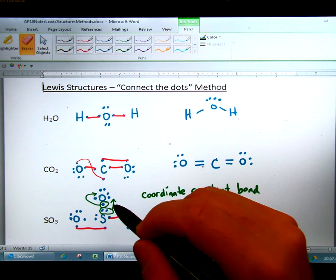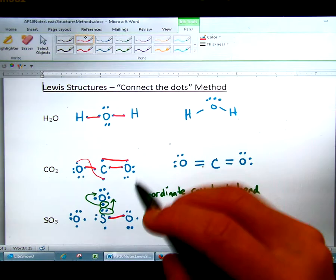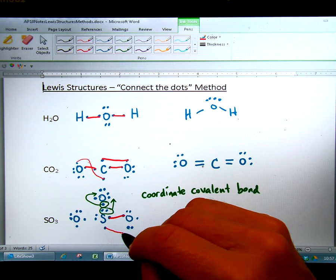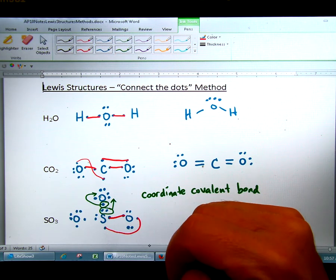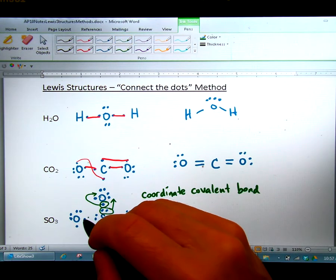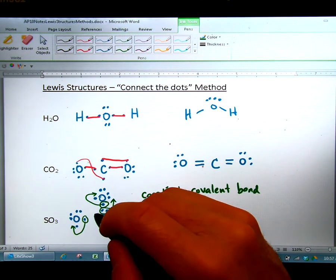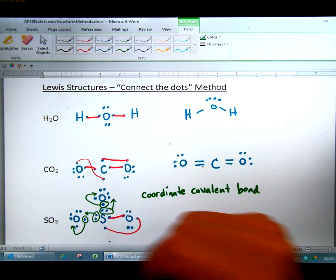So what we're going to have to do is rethink this. So instead of single bonding to each of these, we're going to need to bond this S again to that O like so. And then what we're going to do is another coordinate covalent bond. So we're going to take this and move it down with that. And then we're going to take this whole pair and make it become the bond.